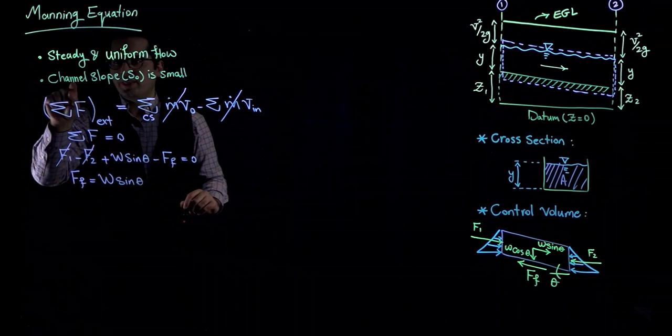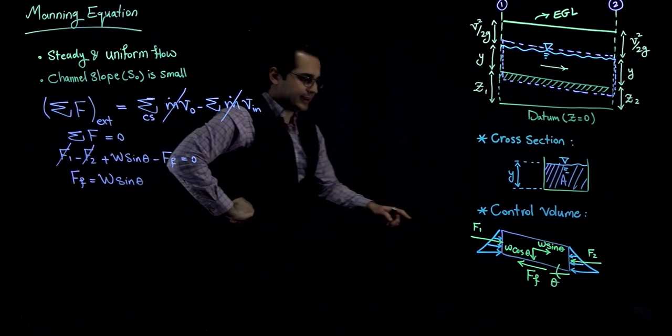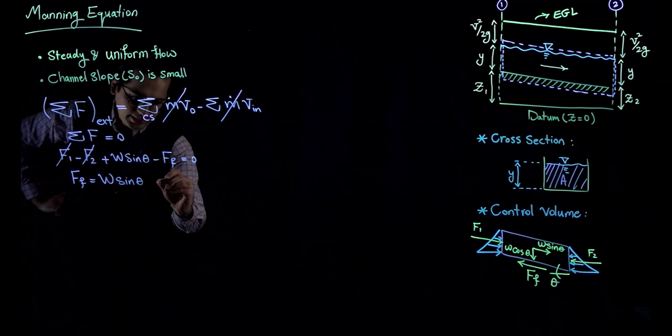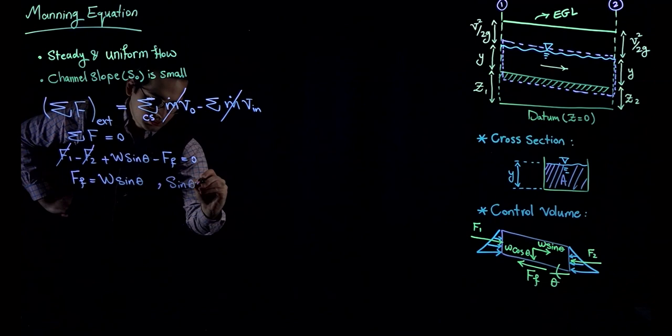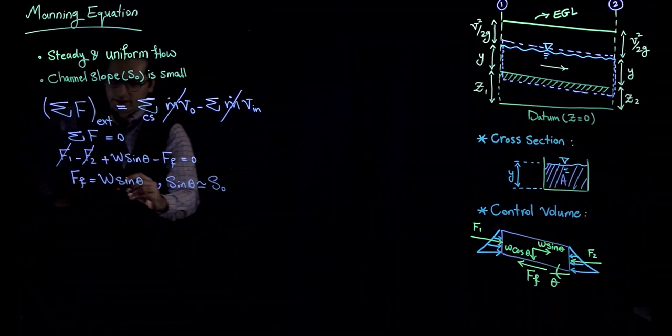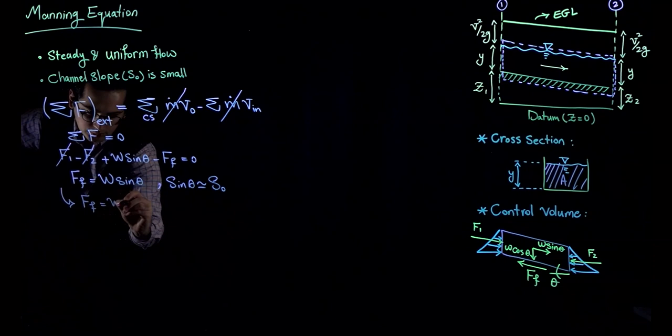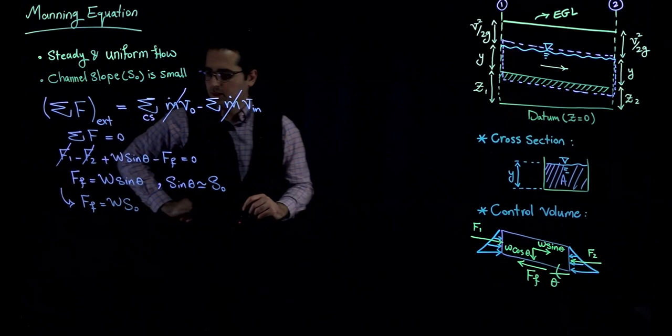Now let's go back to the assumption that channel slope S sub zero is small. That means theta is very small, so sine of theta is approximately equal to the slope of the channel S sub zero. We can therefore write this equation in the form of W times S sub zero.